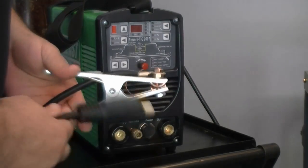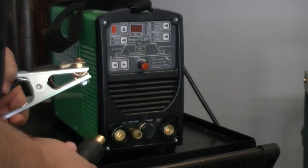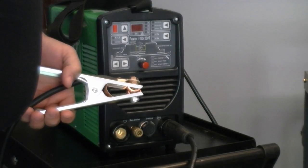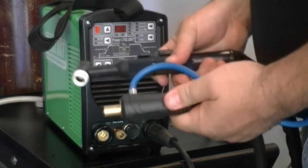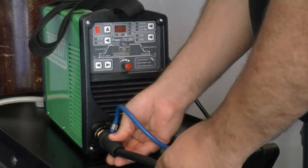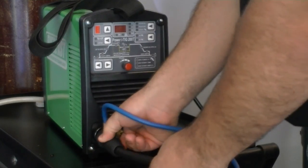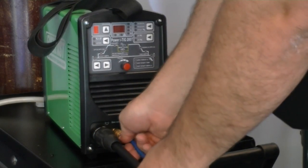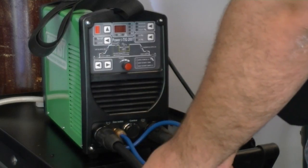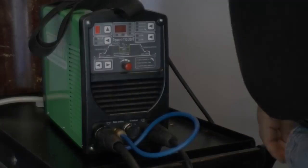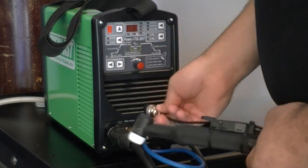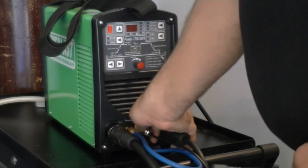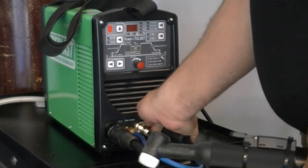As with all TIG operations, connect the work clamp to the positive connector. Be sure to twist the connector about a quarter turn clockwise to fully secure it. Next, connect the power cable on the torch to the negative connector. Connect the gas fitting on the torch by simply pressing it in until it clicks into place onto the gas connector. Whether you're using the torch switch or the optional foot pedal, connect the control cable at this time. Make sure the nut is fully tightened.